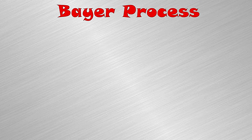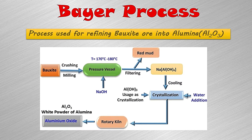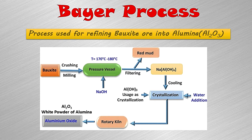The Bayer process is a refining process of the ore. In this process, bauxite ore is reacted with sodium hydroxide solution and it produces sodium tetrahydroxylaluminate — you can see the formula here. After cooling, this sodium tetrahydroxylaluminate produces aluminium hydroxide crystals. In a rotary kiln, these aluminium hydroxide crystals are converted into the white powder of aluminium oxide, also known as alumina.